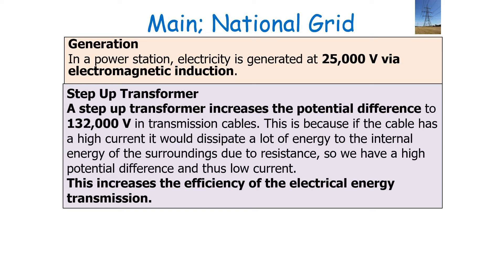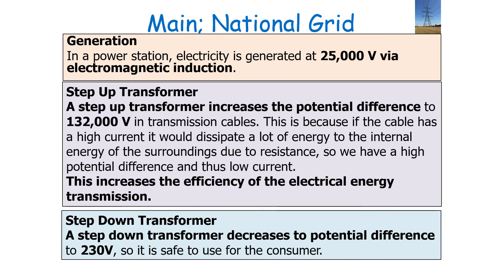If the cable has a high current it would dissipate a lot of energy to the internal energy of the surroundings due to resistance, so we have a high potential difference and therefore low current to increase the efficiency of electrical energy transmission. Then finally, a step-down transformer decreases the potential difference to 230 volts so it is safe to use for the consumer.